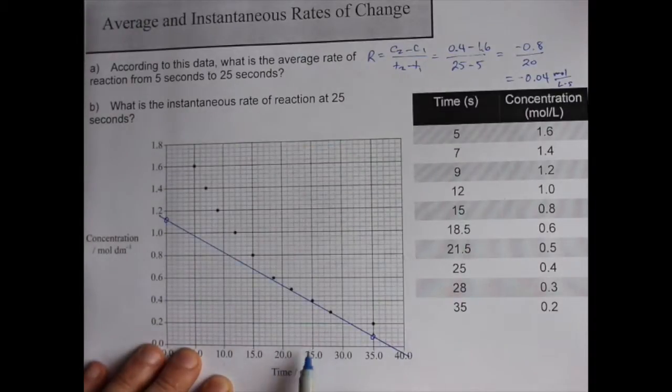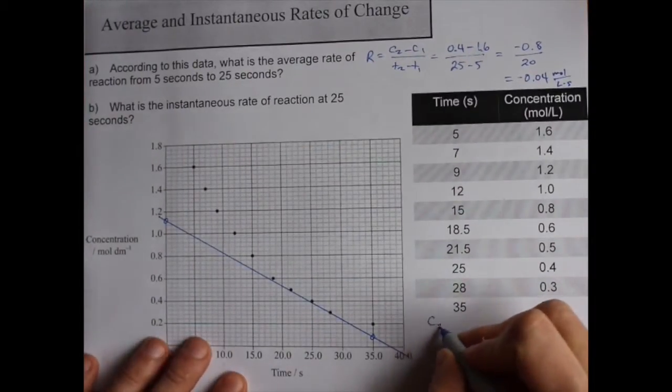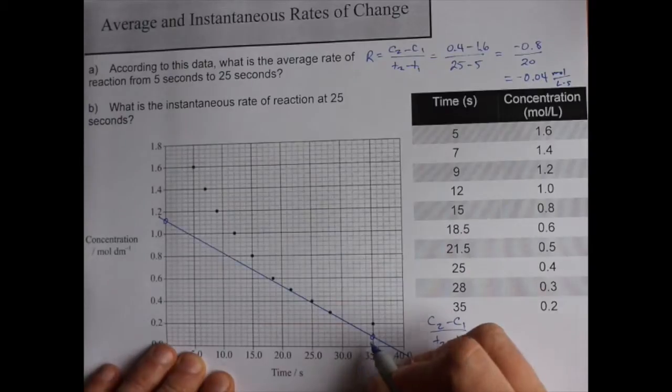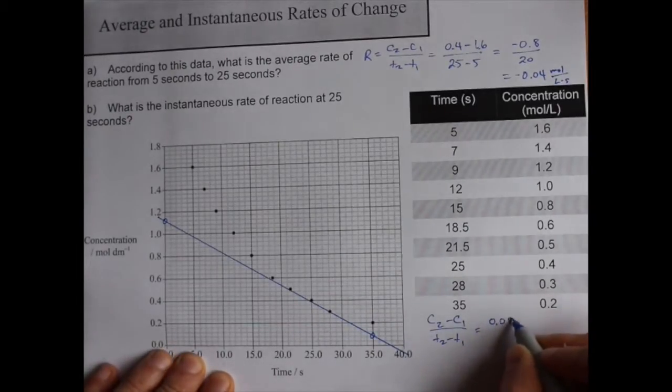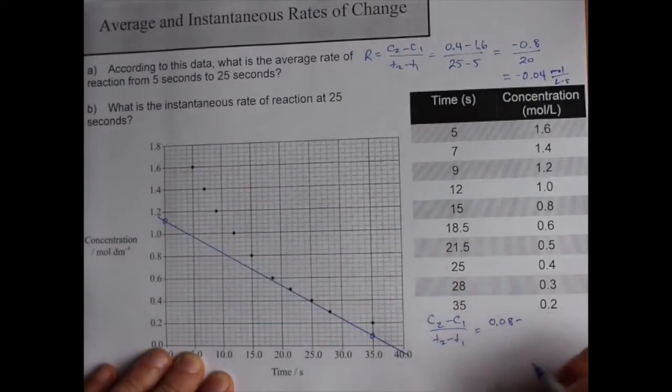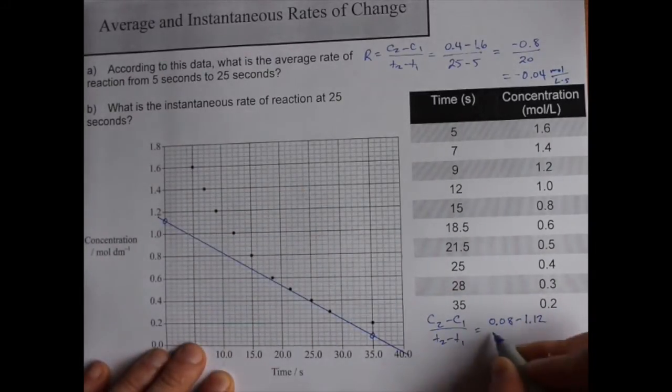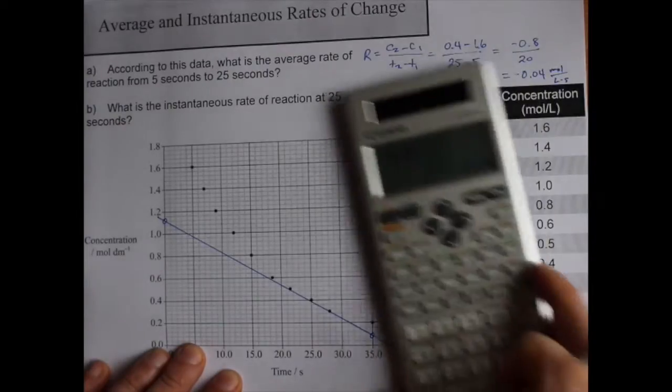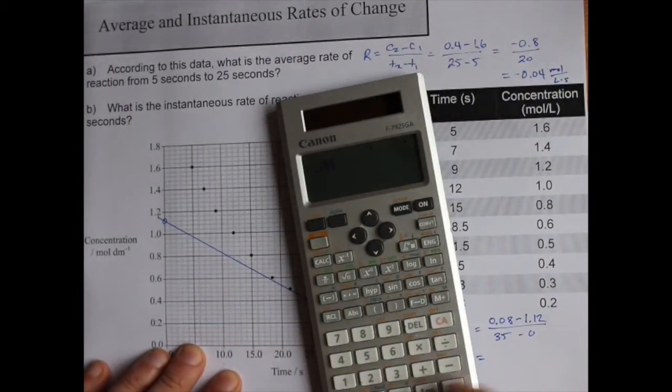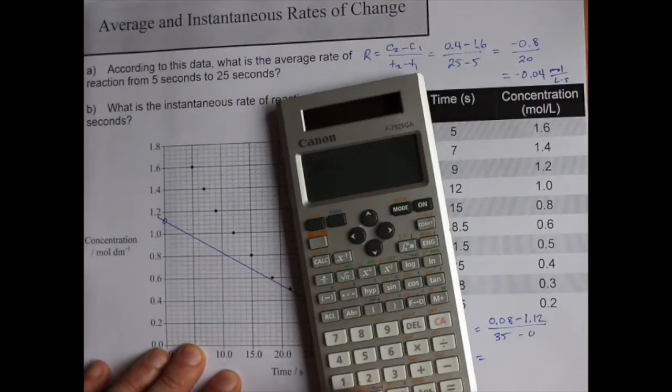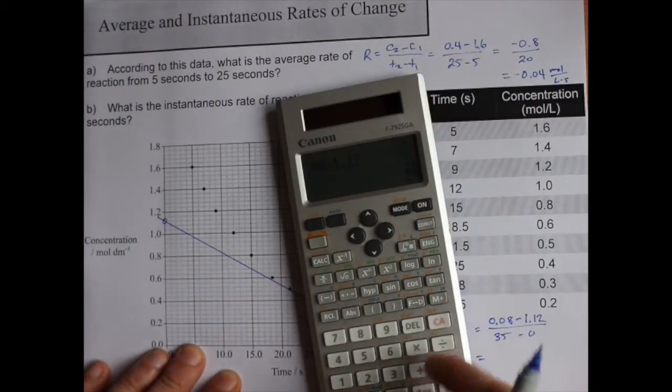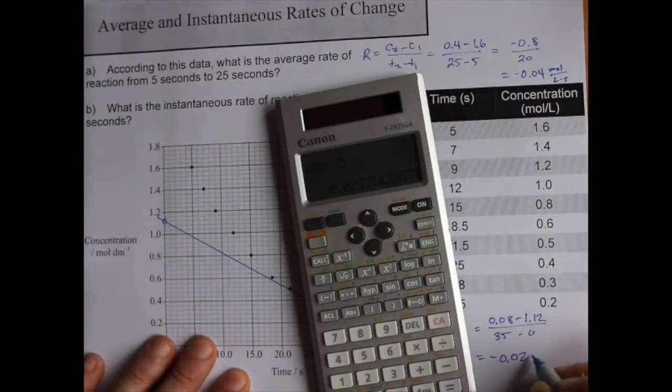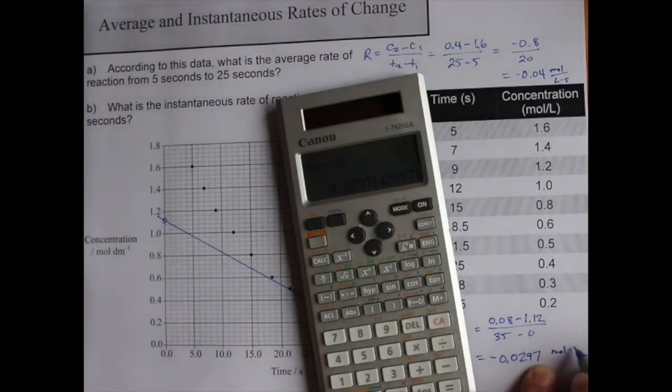Instantaneous rate of reaction at 25 seconds is C2-C1 over T2-T1. Concentration 2 is 0.08, it looks like. Concentration 1 is 1.12, T2 was 35, T1 was 0. I'll do this on the calculator. That's negative 0.08, nope, positive 0.08 minus 1.12 is that divided by 35 and I end up with negative 0.0297 moles per liter per second.